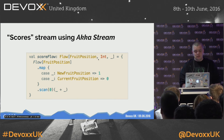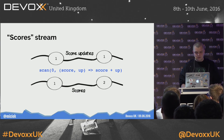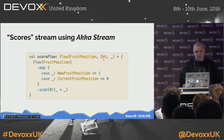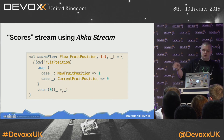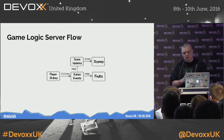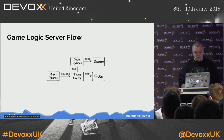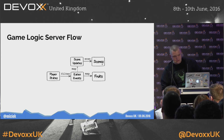In Akka, the score flow takes fruit position as input and int (score) as output — one in, one out. We map each fruit position: if it's a new fruit position we add 1, if it's the current position we add 0. Then we scan all those values and output when it changes. The game logic server flow: player states are filtered for eaten events, mapped to get score updates and fruit positions, and scores are scanned to get cumulative scores.